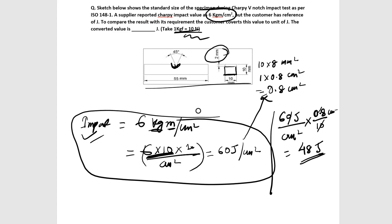So this will be the converted value, it will be 48 Joule. So this unit, that is kgm per cm square, was used long back, I think 20-30 years before.